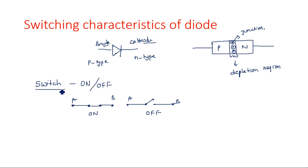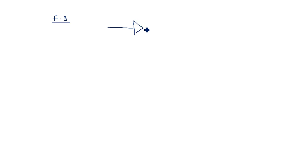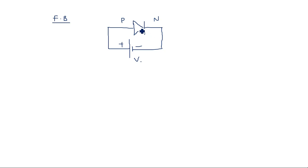The diode is mainly used as a switch. On means forward bias condition and off means reverse bias condition. In forward bias condition, positive terminal is connected to the p-type material and negative terminal is connected to the n-type material. In this situation, the diode operates in forward bias condition and current flows across the junction — the diode acts as an on switch.